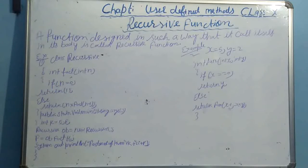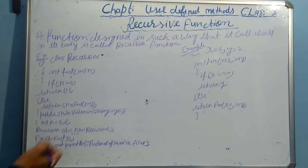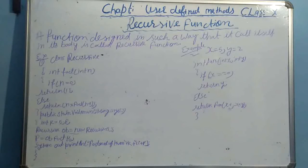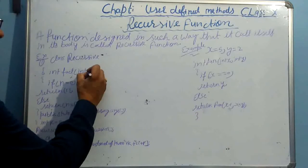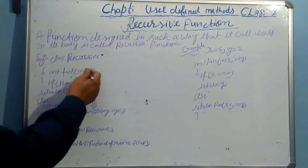By using the main function, it will create an object. By using the object, it will take the value of k by using ob.fact(k). And it will store into the class key. Then this value of k will be stored in factorial as integer n. Means the value of k is 5 and the value of n is 5.